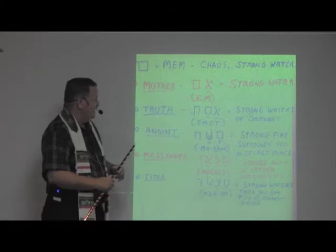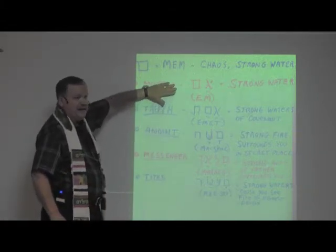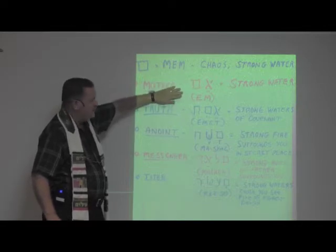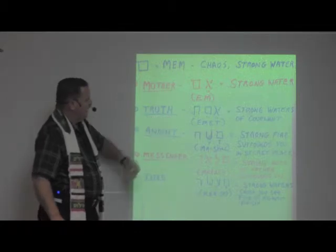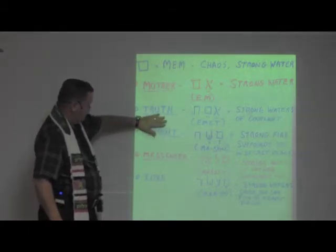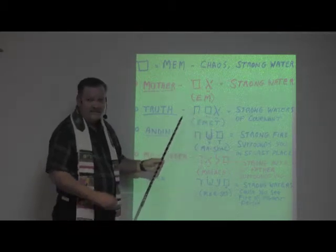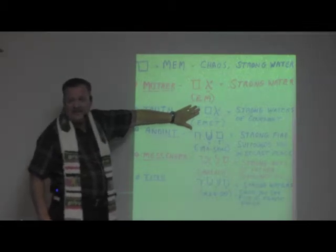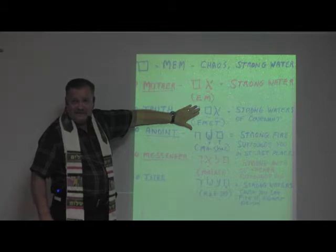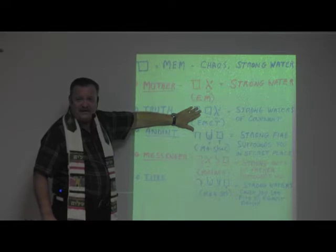The interesting thing is the word mother is used as a root for other words, including truth. If you look at the word for truth, it's made up of the aleph, the mem, and the tov. If we cover up the tov, what do you see? It's the word for mom. So if you add covenant to the word for mom, you get truth.